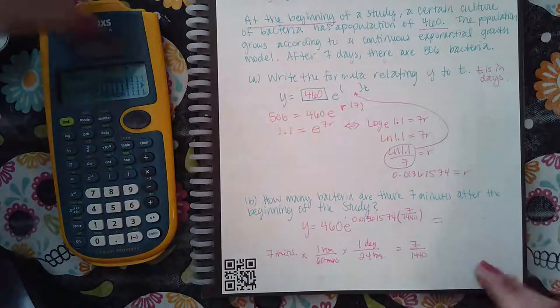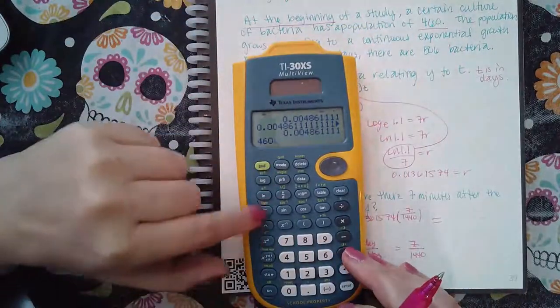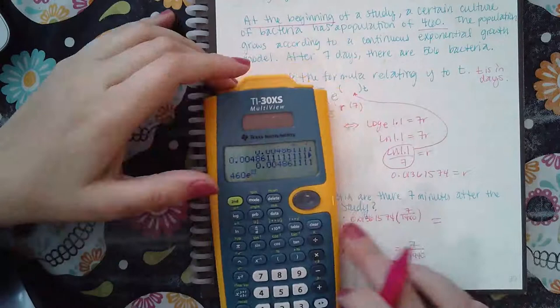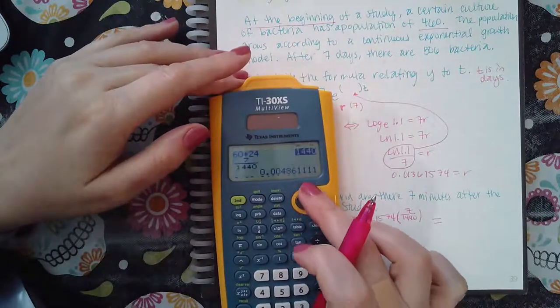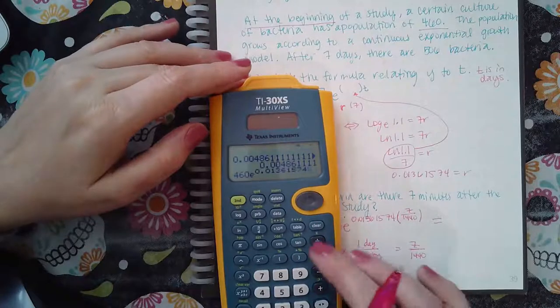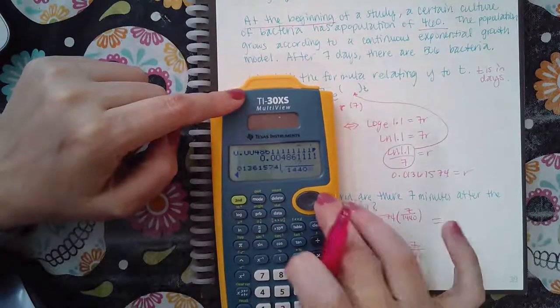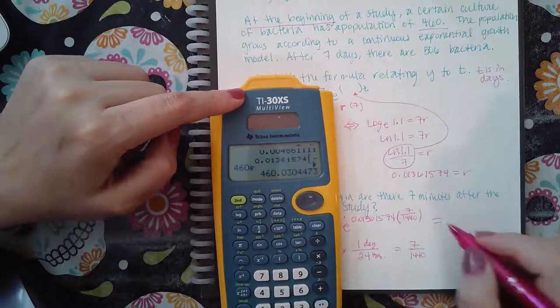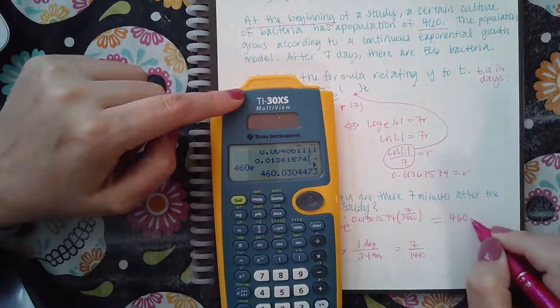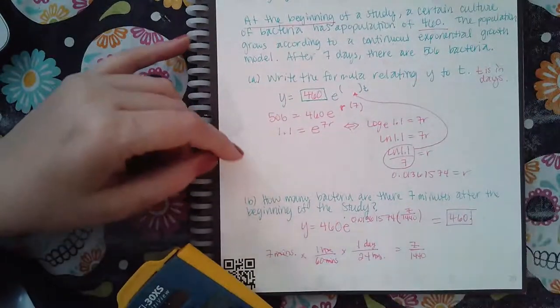And I didn't do that earlier. So 460, and then E, and I'm going to go find this decimal number because it's up there somewhere. It's just going to, there is that decimal times seven over 1440. And I get 460 point, tell me to round a certain spot. So I'm just going to say 460.